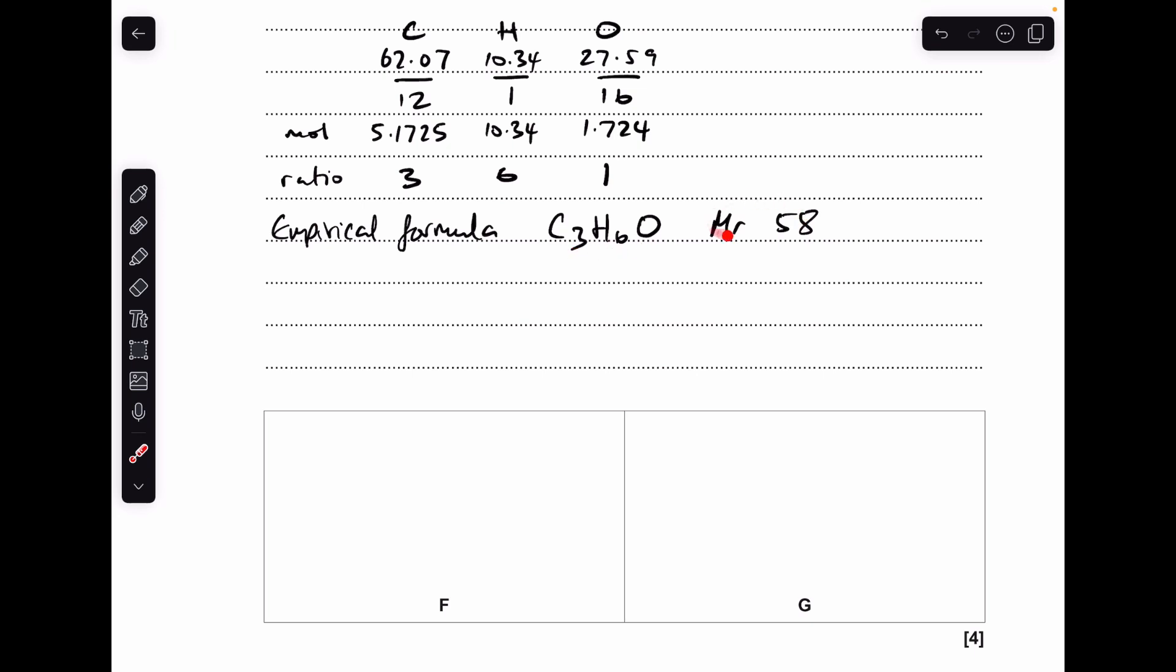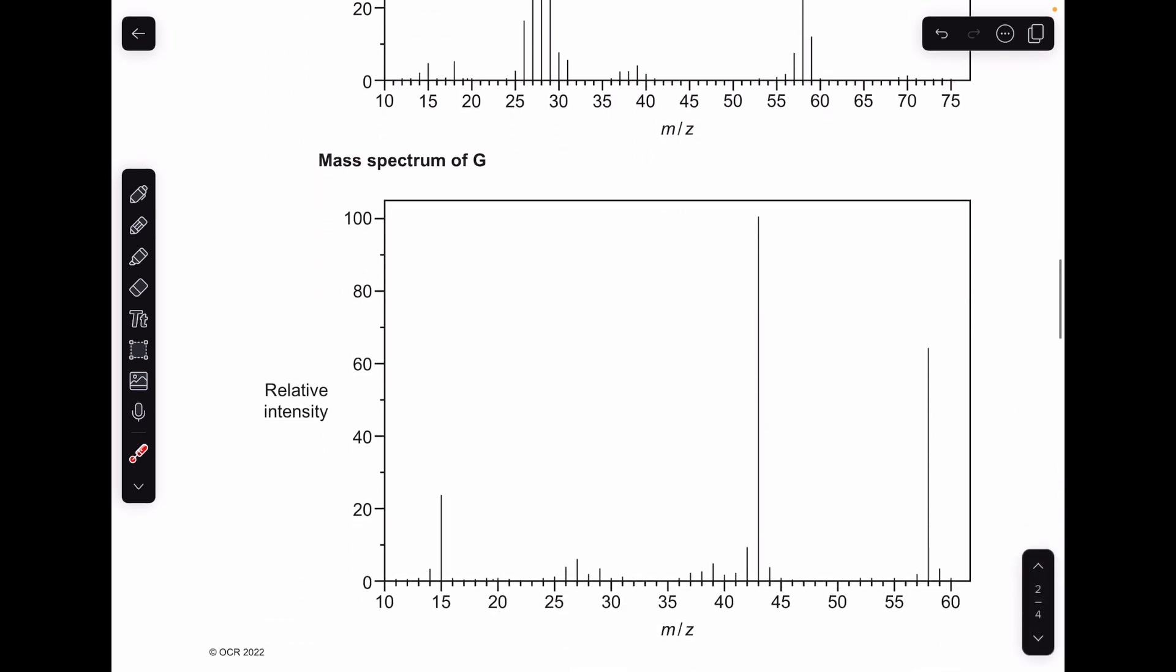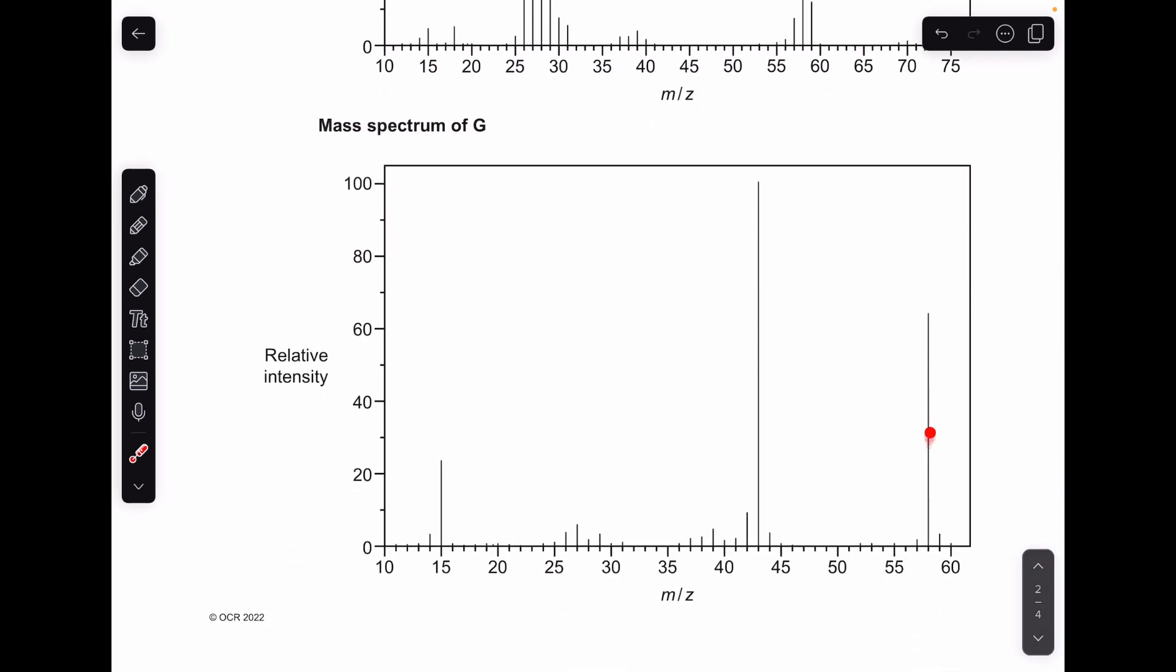So the next thing we must do is work out the MR of that. It's 58. And then if we look at the mass spectra, we'll look at F first. We've got a peak here at 58 so it's looking like the molecular ion peak is that one, and then if we look at G we've got another 58 here.